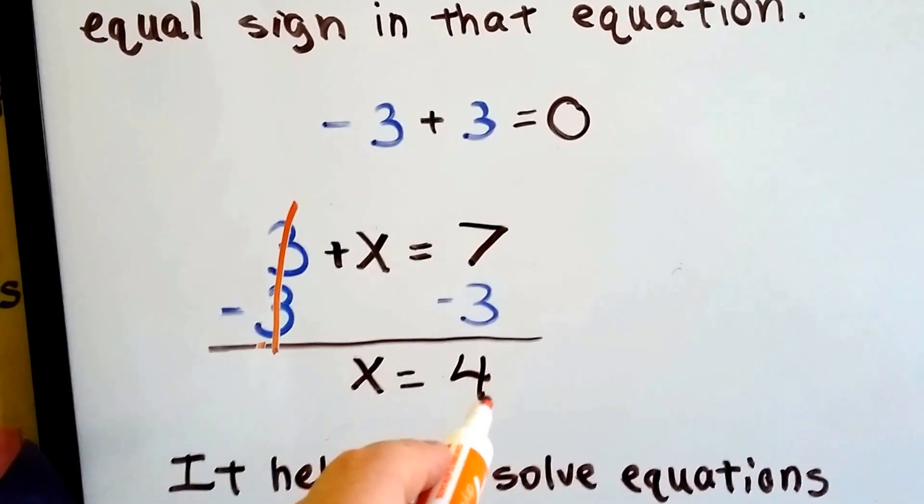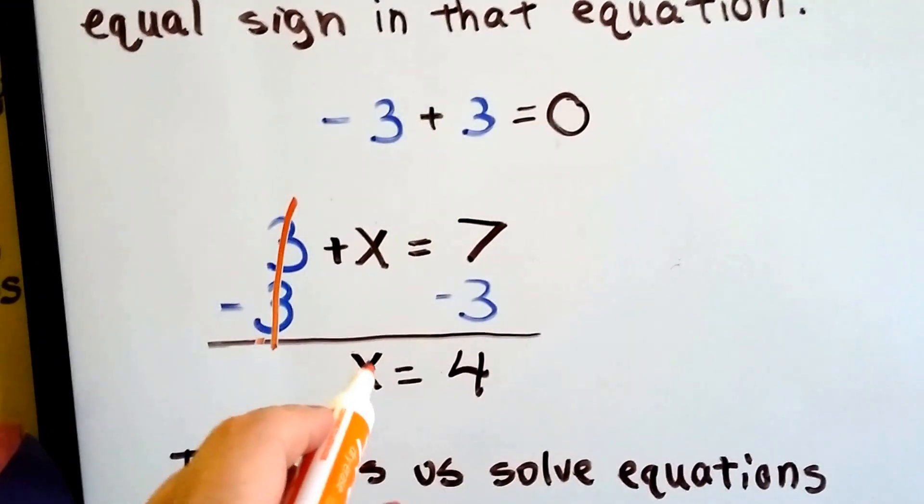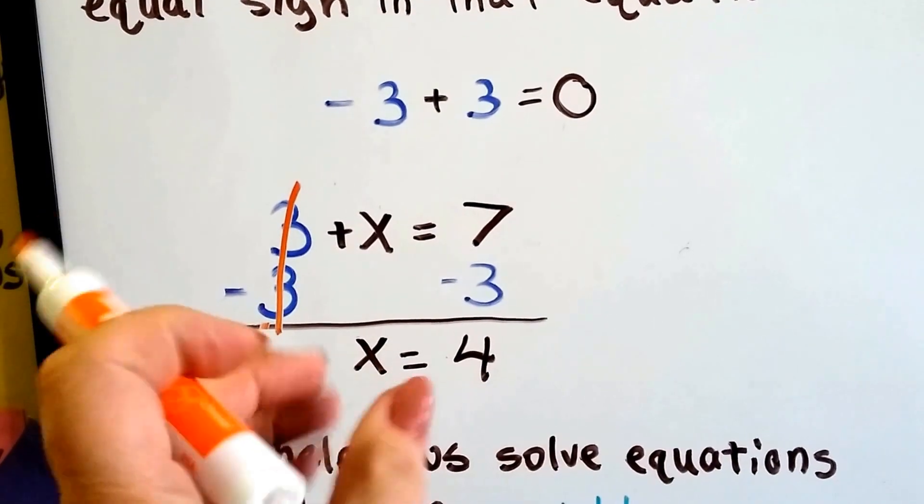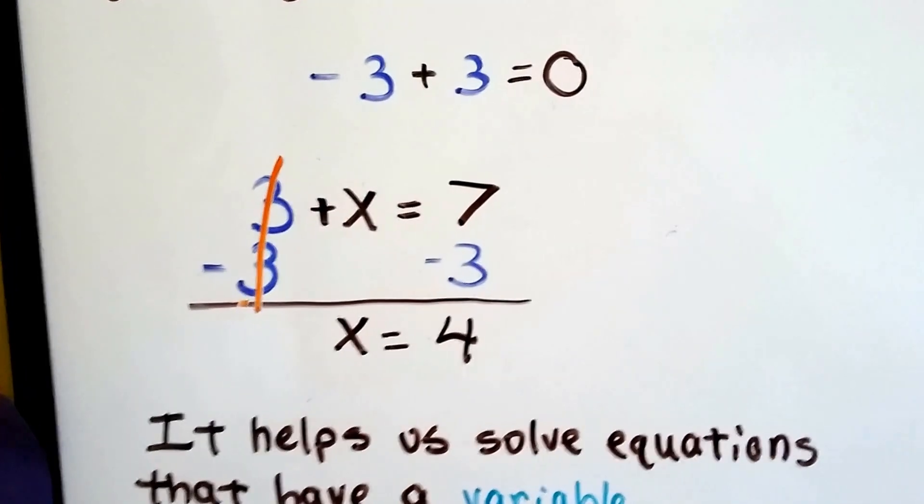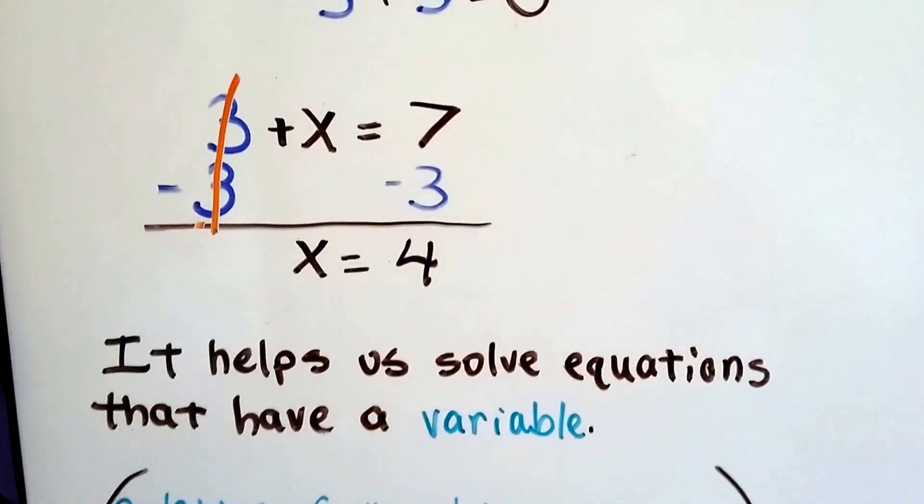7 take away 3 is 4, and so that tells us that x equals 4. Because we isolated this x, we got it by itself on this side of the equal sign. That's how we solve for a variable in addition.